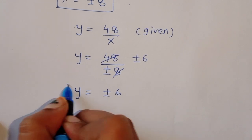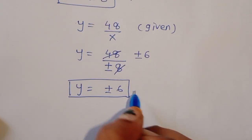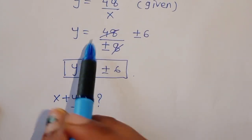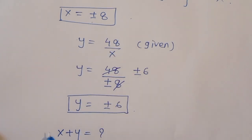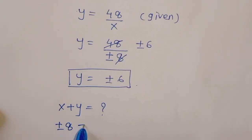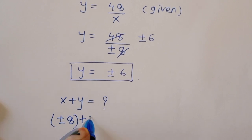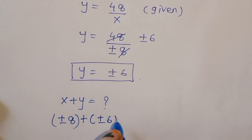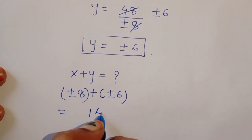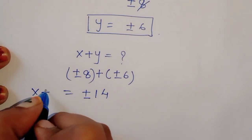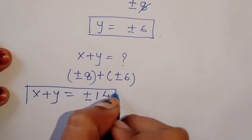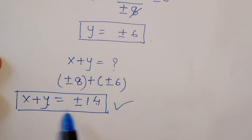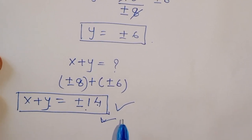So the value of y is ±6. The question asks for x + y. Therefore, x + y = (±8) + (±6) = ±14. So x + y = +14 or x + y = -14. This is the correct answer.